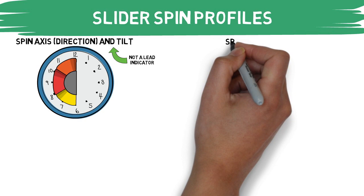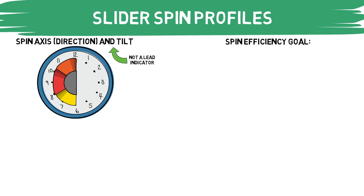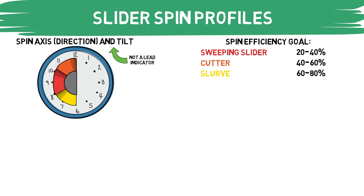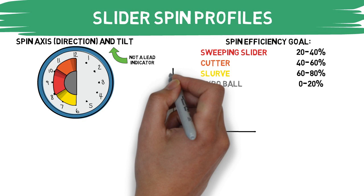We talked a lot before about spin efficiencies, and while this can be a complex subject — especially with all of the different kinds of sliders — here are some general ranges for different pitch types that have been found to be successful. Your sweeping slider sits between 20 and 40 percent. Cutters are a bit higher at 40 to 60 percent. Your slurve is the highest at 60 to 80 percent, and the gyro spin slider is the lowest between 0 and 20 percent.